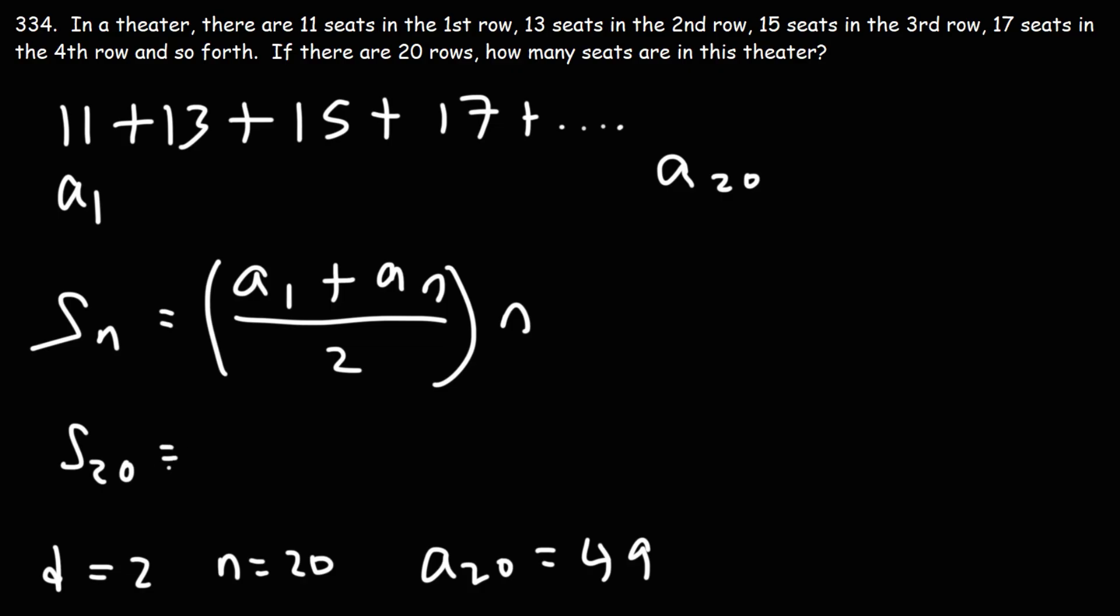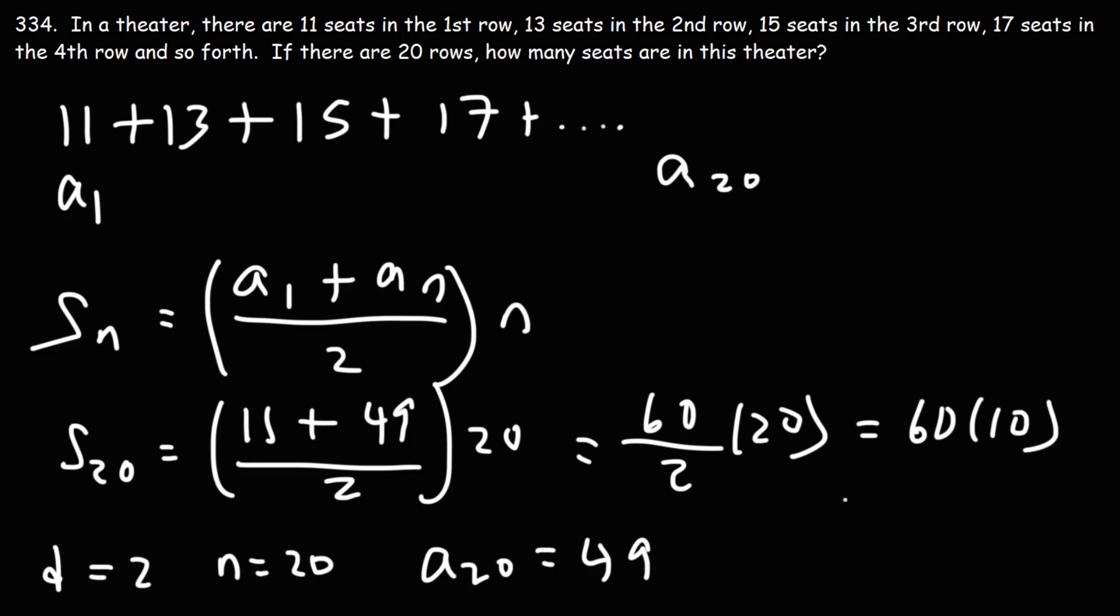So we want to find the sum of the first 20 terms. The first term is 11. The 20th term is 49 divided by 2 times the number of terms. So we have 11 plus 49, that's 60. Now 20 divided by 2 is 10. 60 times 10 is 600.